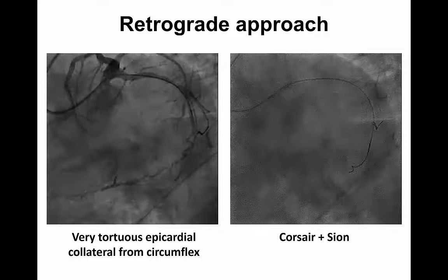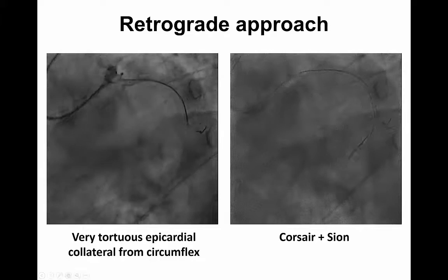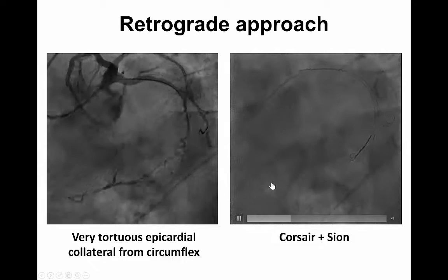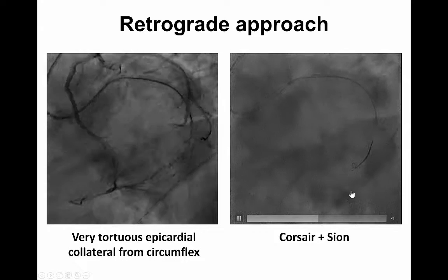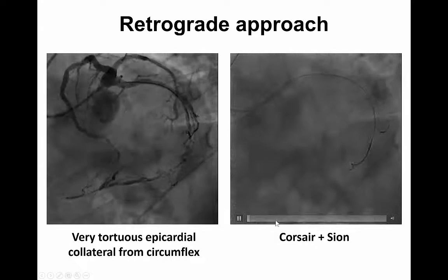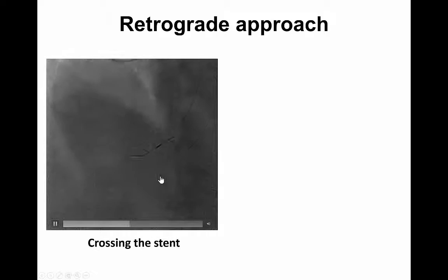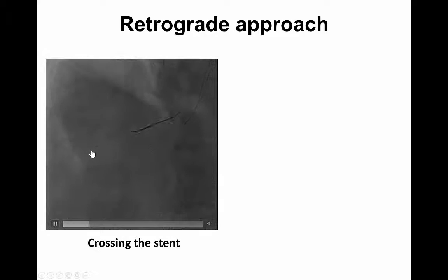Accordingly we switched to a retrograde approach through a very tortuous epicardial collateral from the circumflex, as you can see here. This is a Corsair microcatheter and a Sion wire navigating the very tortuous anatomy. At a certain point the wire jumps into the distal true lumen. The Sion wire very quickly crossed in what we believed was a true-to-true lumen fashion into the proximal vessel and also into the anterograde catheter, as you can see here.